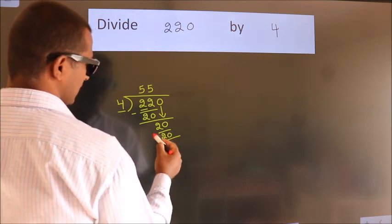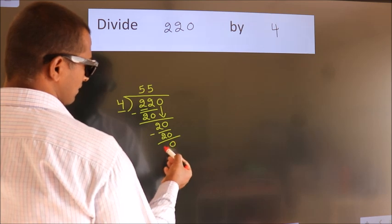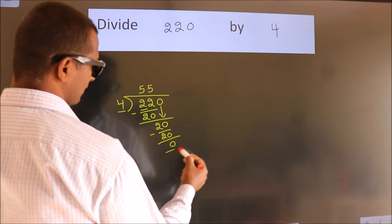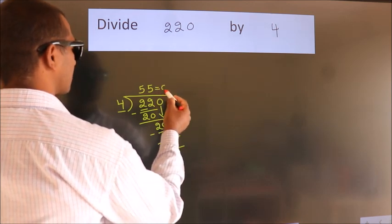Now we subtract. We get 0. After this, no more numbers to bring it down, and we got remainder 0. So this is our quotient.